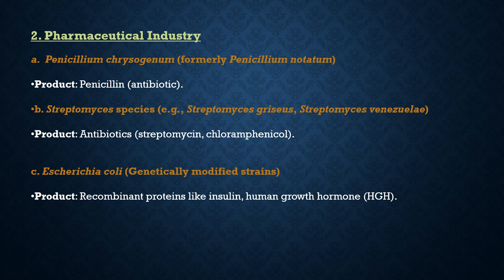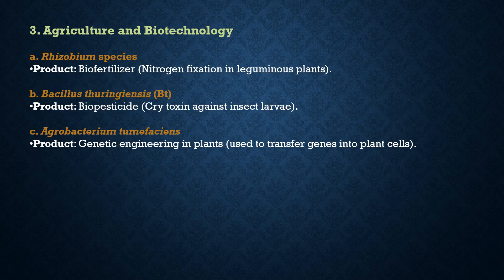The third pharmaceutical example is Escherichia coli, a genetically modified strain used for recombinant protein production such as insulin and growth hormones. Advantages include rapid growth, easy genetic manipulation, and cost-effective production. Disadvantages include potential production of endotoxins from the bacterial cell wall that can contaminate the product, and the requirement for extensive downstream processing for product purification.